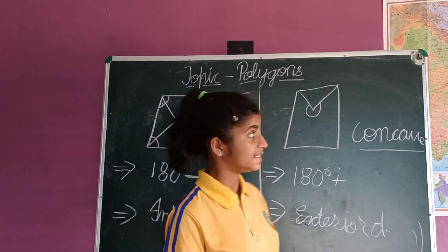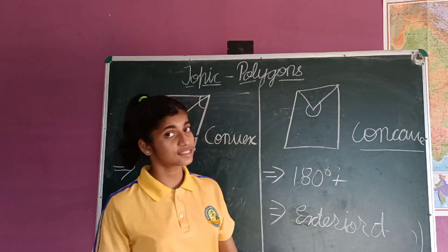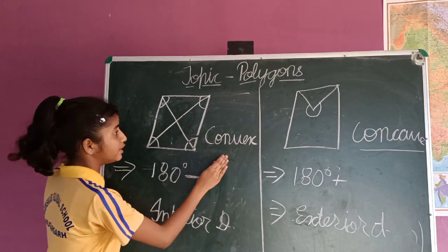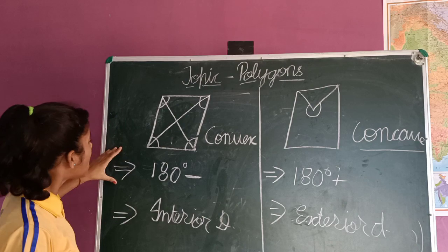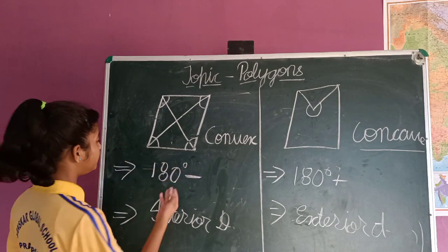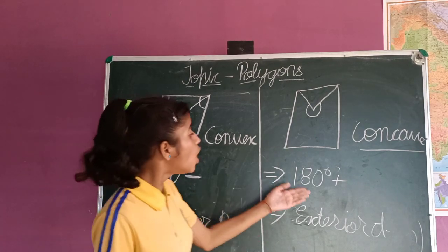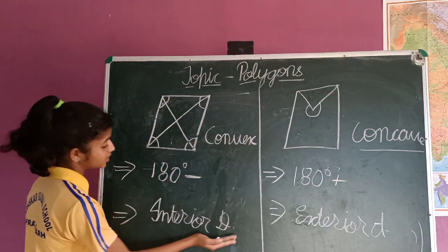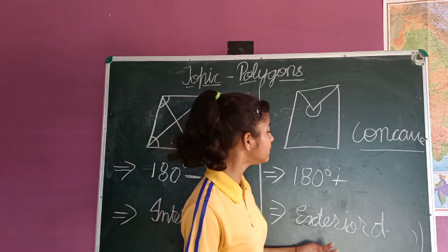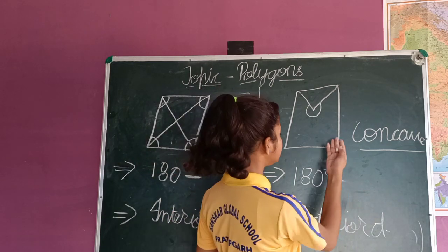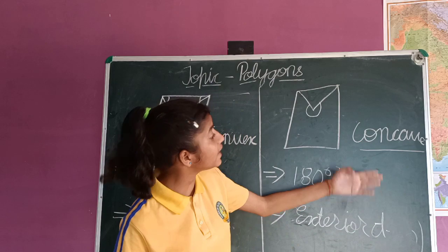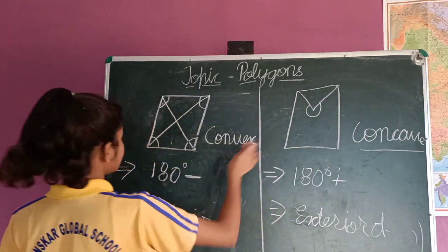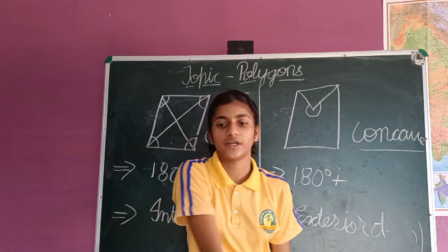Let's have a quick recap about convex and concave polygons. In a convex polygon, all angles are less than 180 degrees, and the diagonal positions are in the interior of the shape. In a concave polygon, at least one angle is greater than 180 degrees, and at least one diagonal lies at the exterior of the shape.